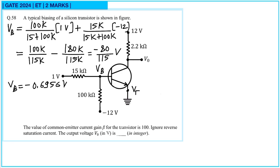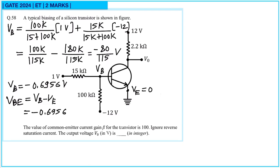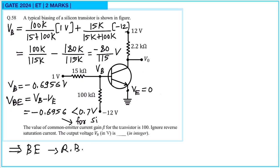The emitter is grounded, so VE is equal to 0. VBE equals VB minus VE, which equals minus 0.6956 V. Since this is a silicon transistor, the forward voltage across the PN junction diode should be 0.7 V. We are getting VBE equal to minus 0.6956 V, which is less than 0.7 V. This means the BE junction is not receiving sufficient forward bias and is in fact reverse biased.